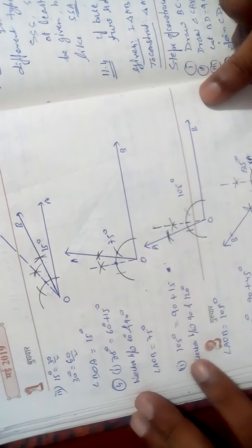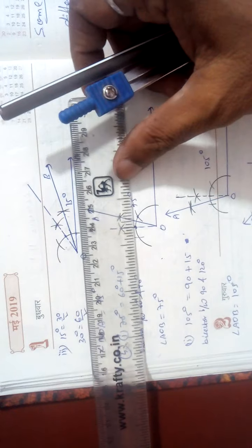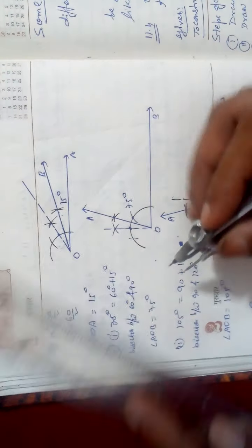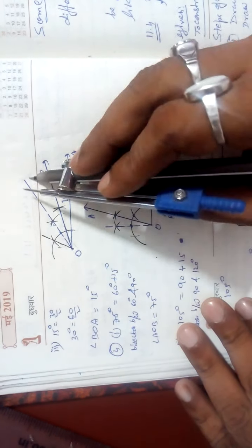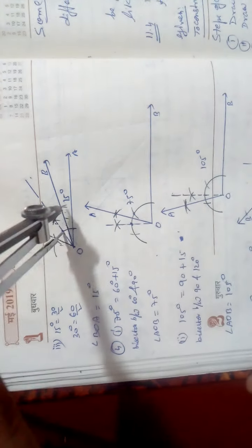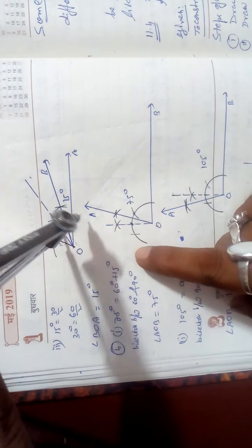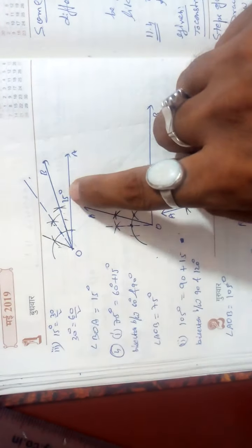For 15 degrees: 15 is very simple — it is half of 30. First draw 60 degrees by compass, then bisect to get 30. Then bisect 30: put the compass, take more than half — you can increase the radius since the gap is very close — mark arcs from each point. Both intersect — join and produce. That is your 15 degrees.